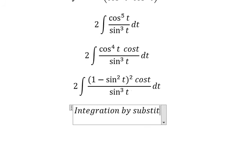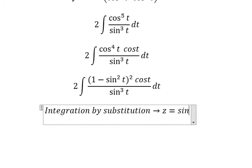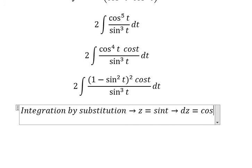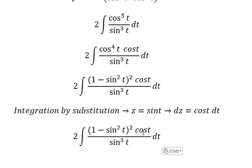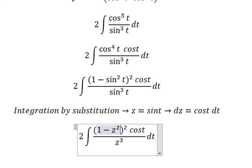We put z equal to sine t, and dz equals cosine t dt. So sine t becomes z to the power of three, and the term with cosine t dt is changed to dz.